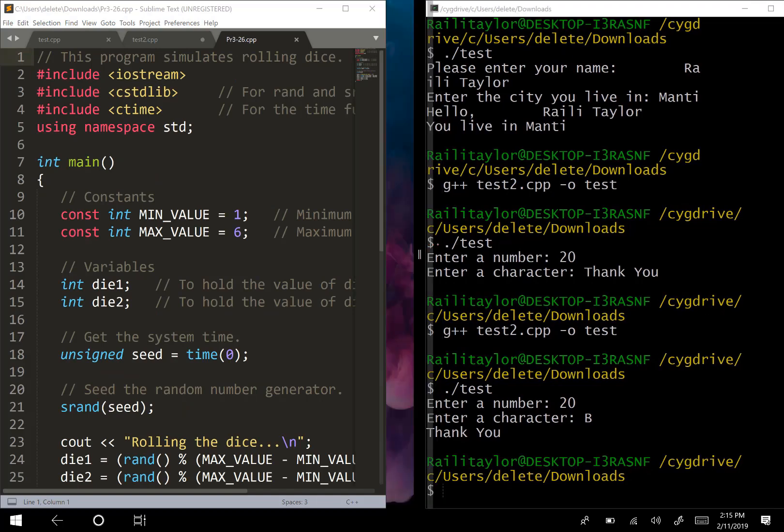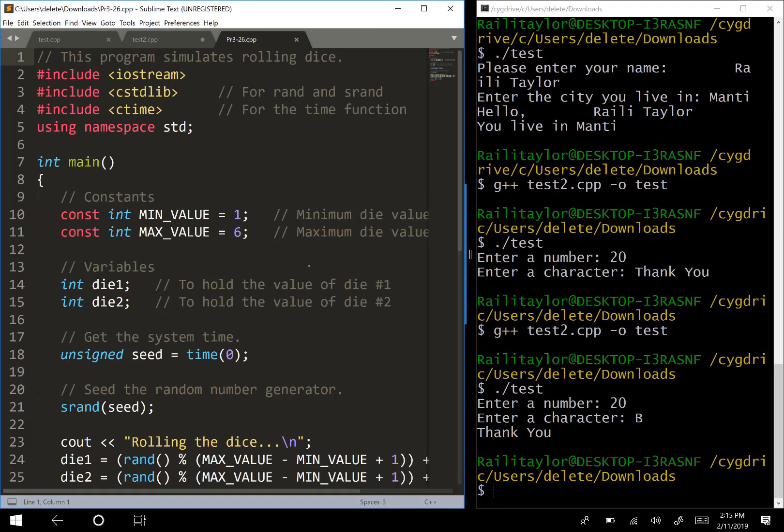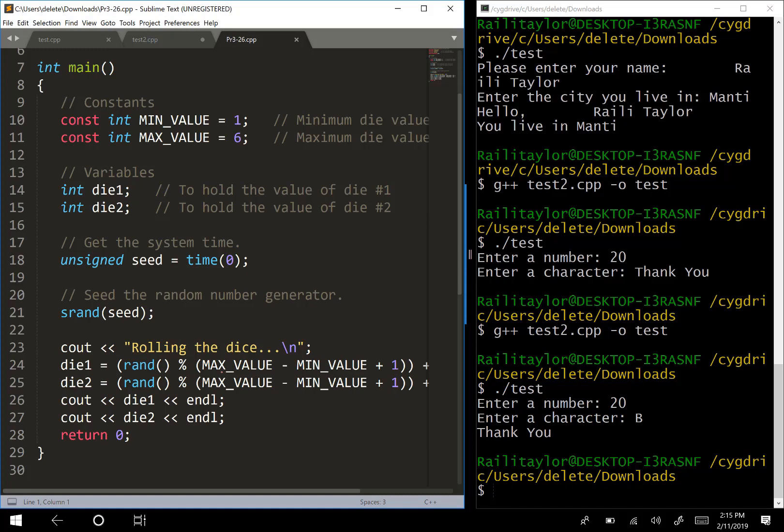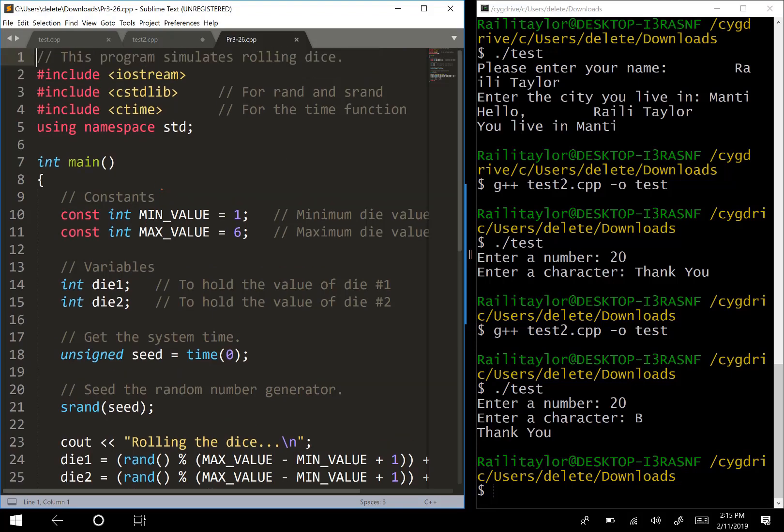So probably the best way to use this formula for setting the range of your random numbers is to just set a variable. We have the CSTDLib because we're using rand and SRand, and we have the C time because we're using the time function. So with this min value and max value, I would actually usually set these as constants because you're not going to want them to change while the program's running. If you put this constant in front of your variable, that sets it to a constant, and it makes it so it can't be changed while the program's running. So if someone tries to change that min value or max value, it's not going to change, and it will give you a compilation error.